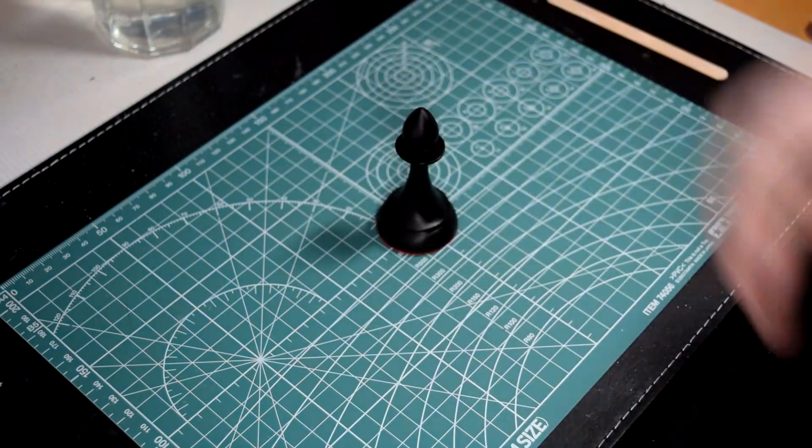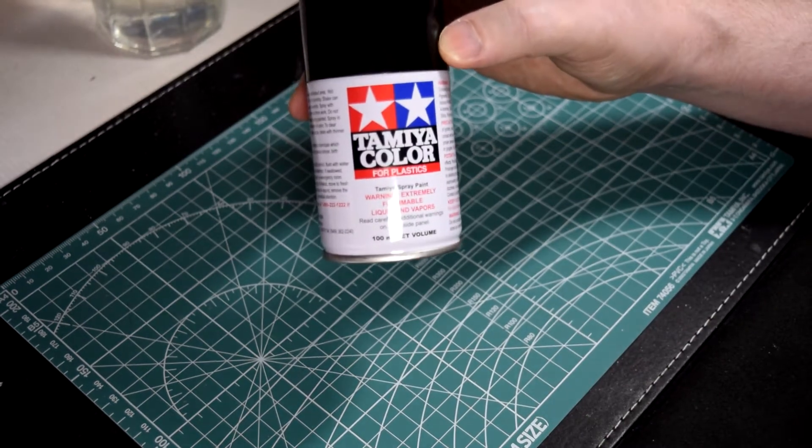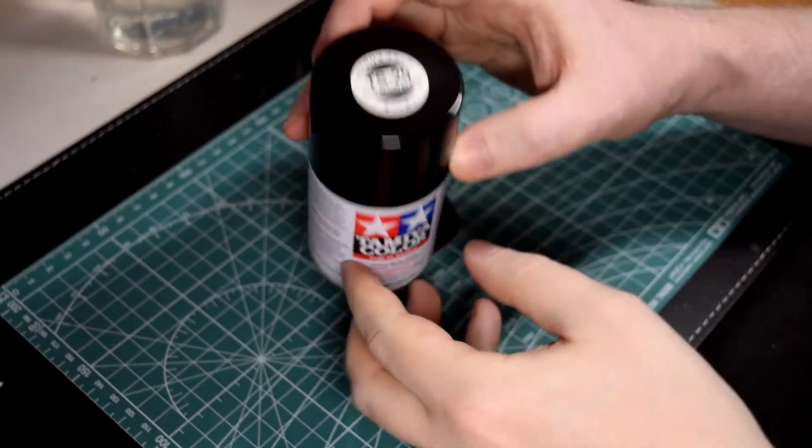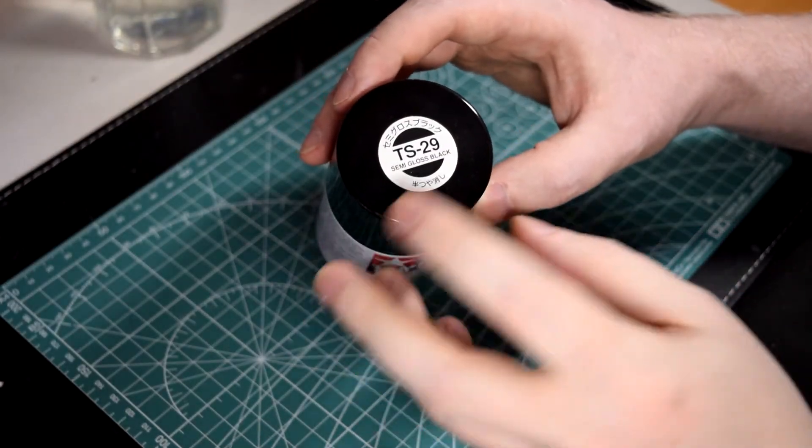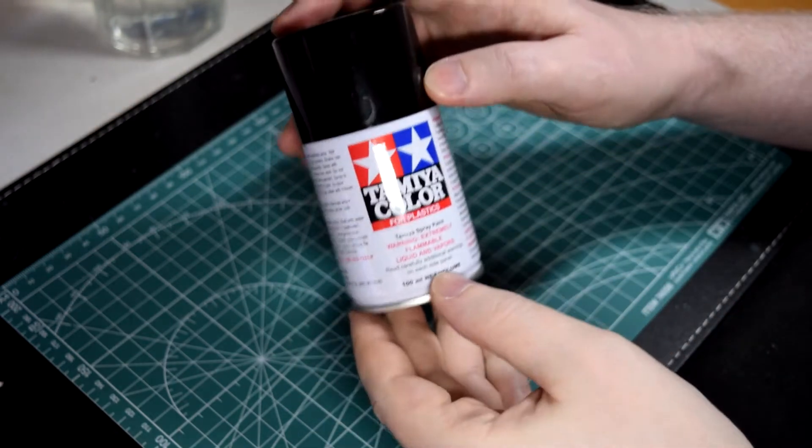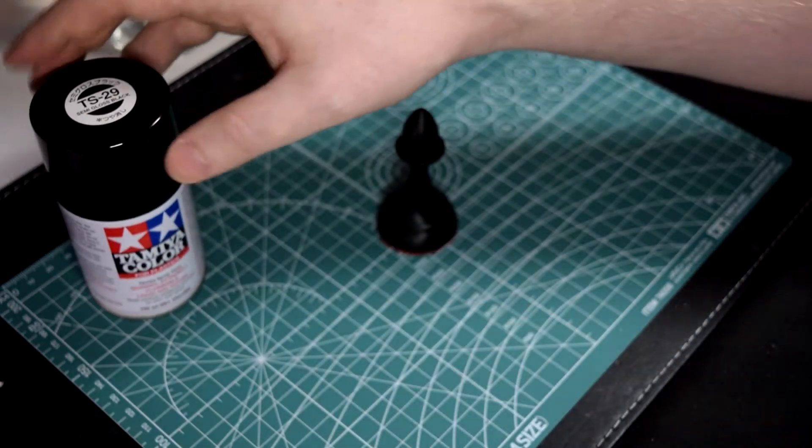You'll need a spray paint. This is Tamiya's semi-gloss black acrylic, but any rattle can acrylic spray paint will be fine. Brush painting won't give you the smooth surface, so it's better to use a spray.